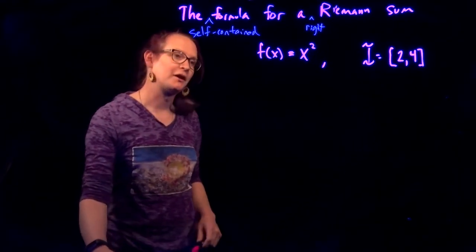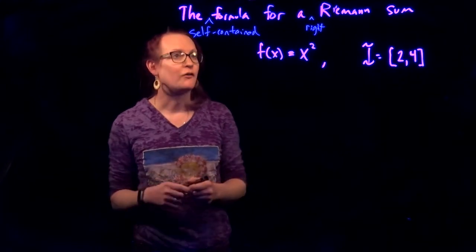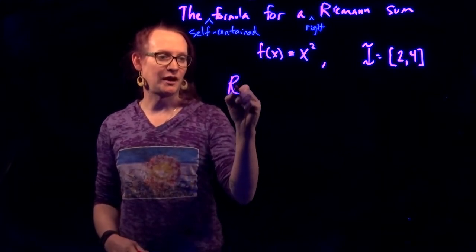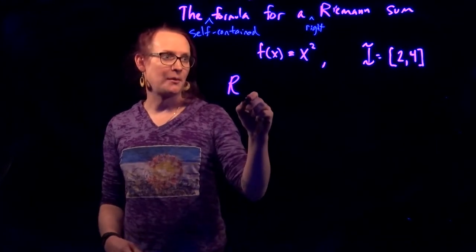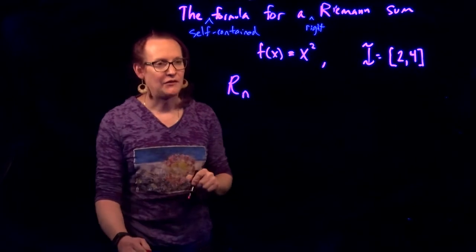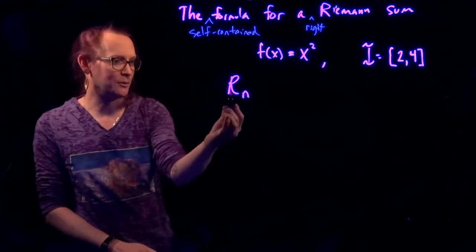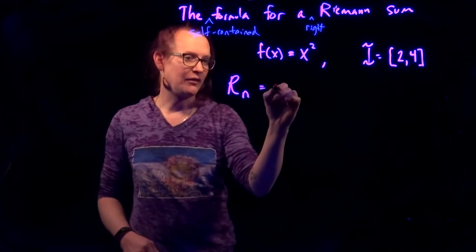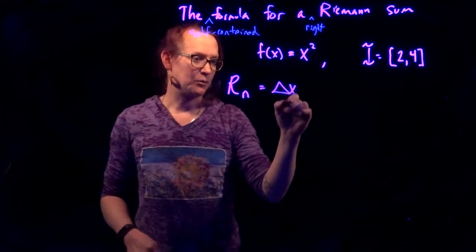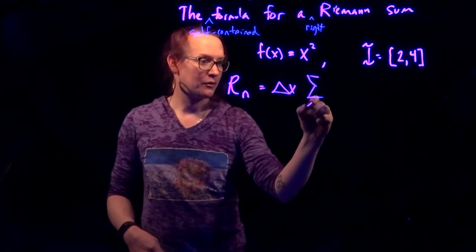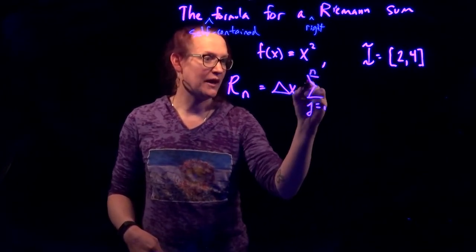So I'd like to start by reminding you about the formula for the right Riemann sum. We're expressing that by using a capital R, and we're putting the number of rectangles down right here. So it's a right Riemann sum with n rectangles, and that is delta x, as one symbol, the width of a rectangle, times the sum from j equals 1 to n.